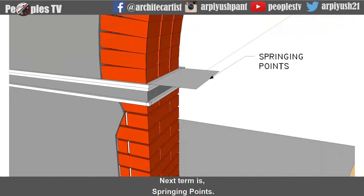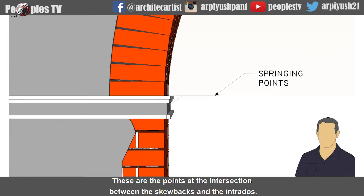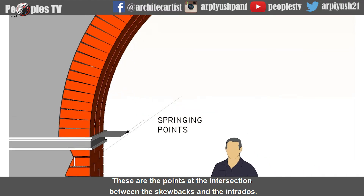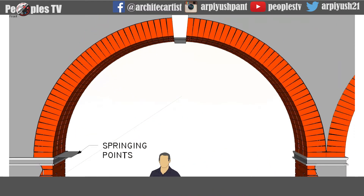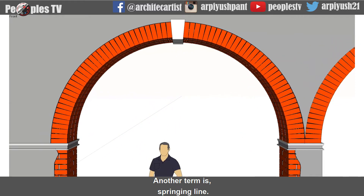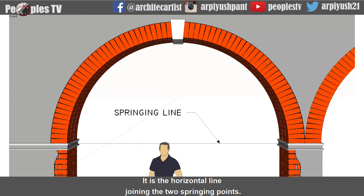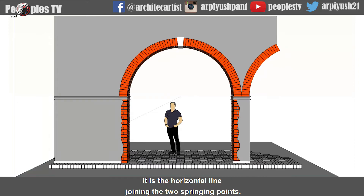The next term is springing points — these are the points at the intersection between the skewbacks and the intrados. Another term is springing line — it is the horizontal line joining the two springing points.